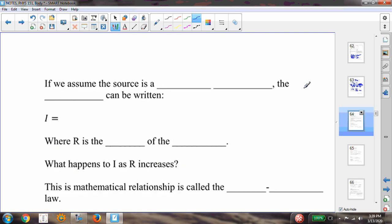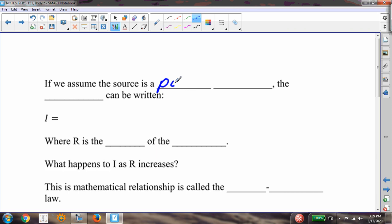If we assume that the source is a point source, which is what we will do. The intensity can be written like this. If the intensity is power over area, then that's going to be power over 4πr². I've already shown you this.